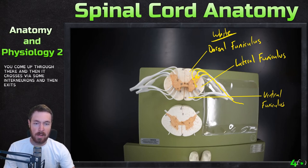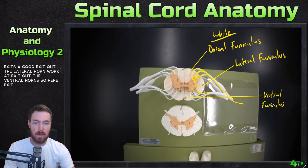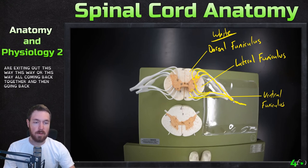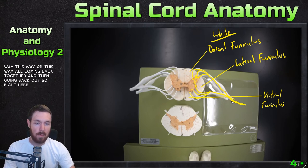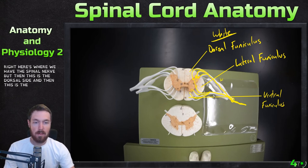They're going to come up through there, and then it crosses via some interneurons and then it exits. It could exit out the lateral horn or it could exit out the ventral horn. So here exiting out this way, this way, or this way, all coming back together and going back out. So right here is where we'd have the spinal nerve — this is the dorsal side and this is the ventral side.